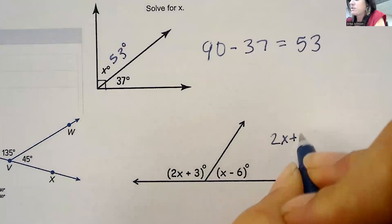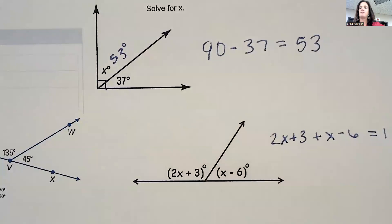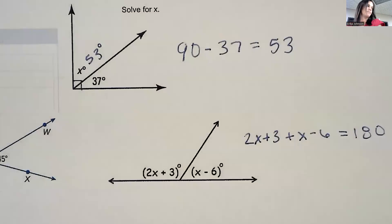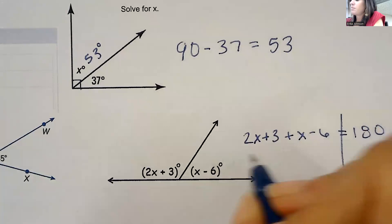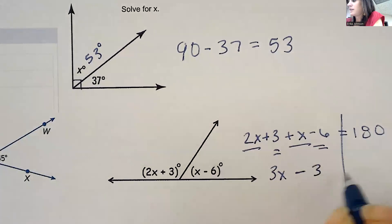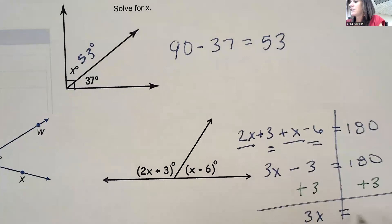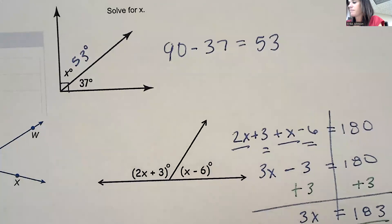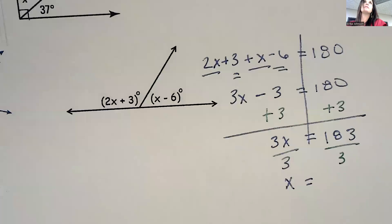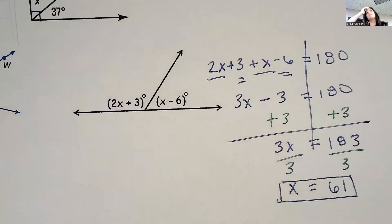Or this one — those make a straight line, that would be 180 degrees. So 2X plus 3 plus X minus 6 is going to equal 180. Put those like terms together: that would be 3X minus 3 equals 180. Add that 3 over: 3X equals 183. And then divide by 3, so X equals 61.